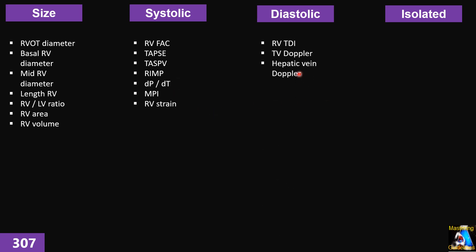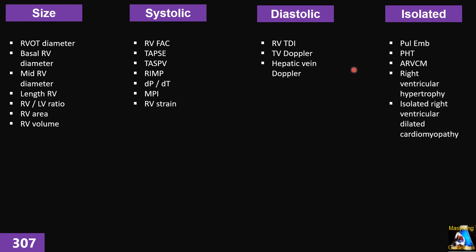For diastolic dysfunction, we measure tissue Doppler of the right ventricle, tissue Doppler of the tricuspid valve — E/A and S prime — and we also talk about hepatic vein assessment and how we evaluate the diastolic dysfunction of the right ventricle, and what the clinical implications of those findings are.